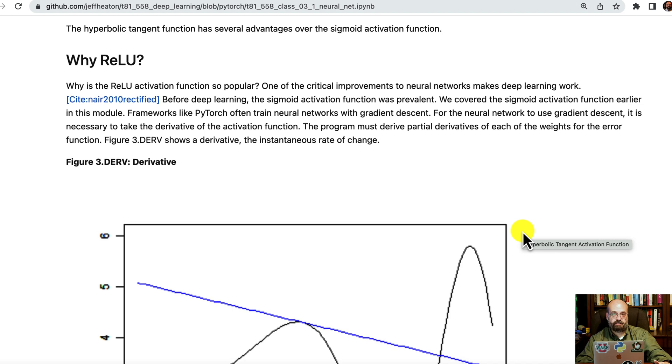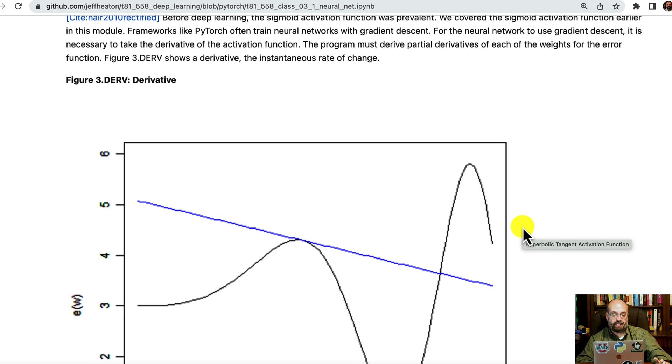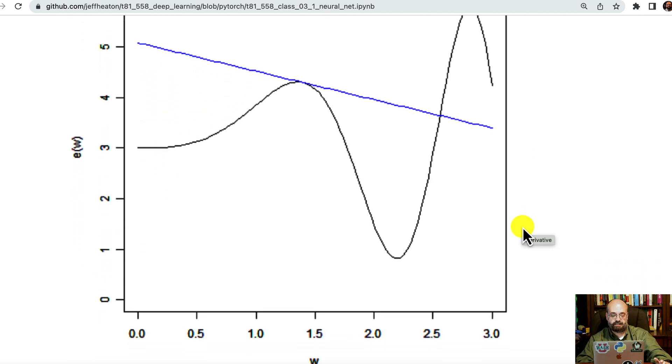Now, why is the rectified linear unit so valuable? Because we're using gradient descent to optimize the neural network. So the weight, you have to optimize the weight sort of one at a time per step or per epoch, before you update the weights. And if you were to calculate the error of the neural network, so what is the difference in value between what it output and what it should have outputted, and you plot this as a function as you change the weight. So as you change the weight, here the error is getting worse. Here the error is getting better, and so on.